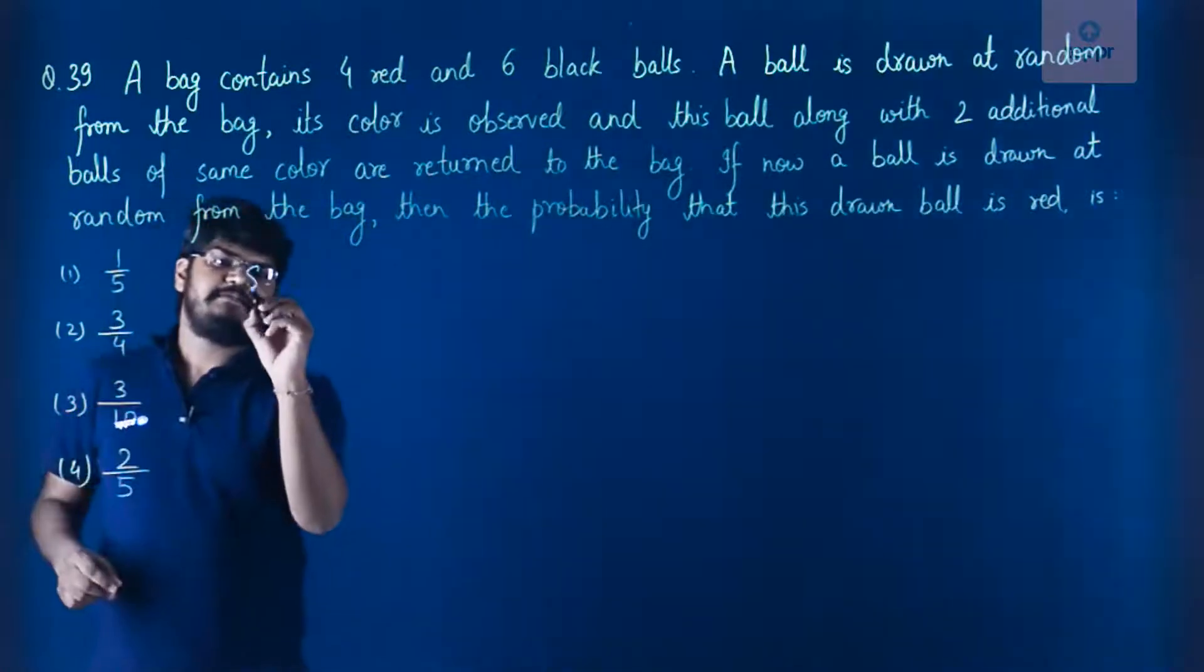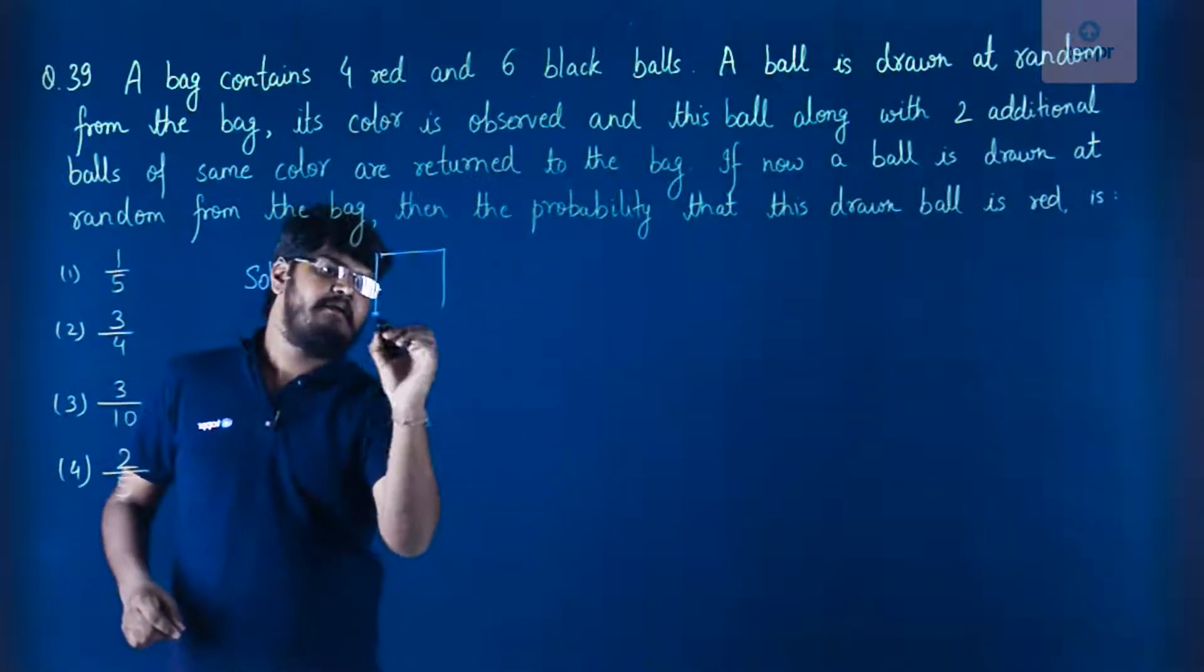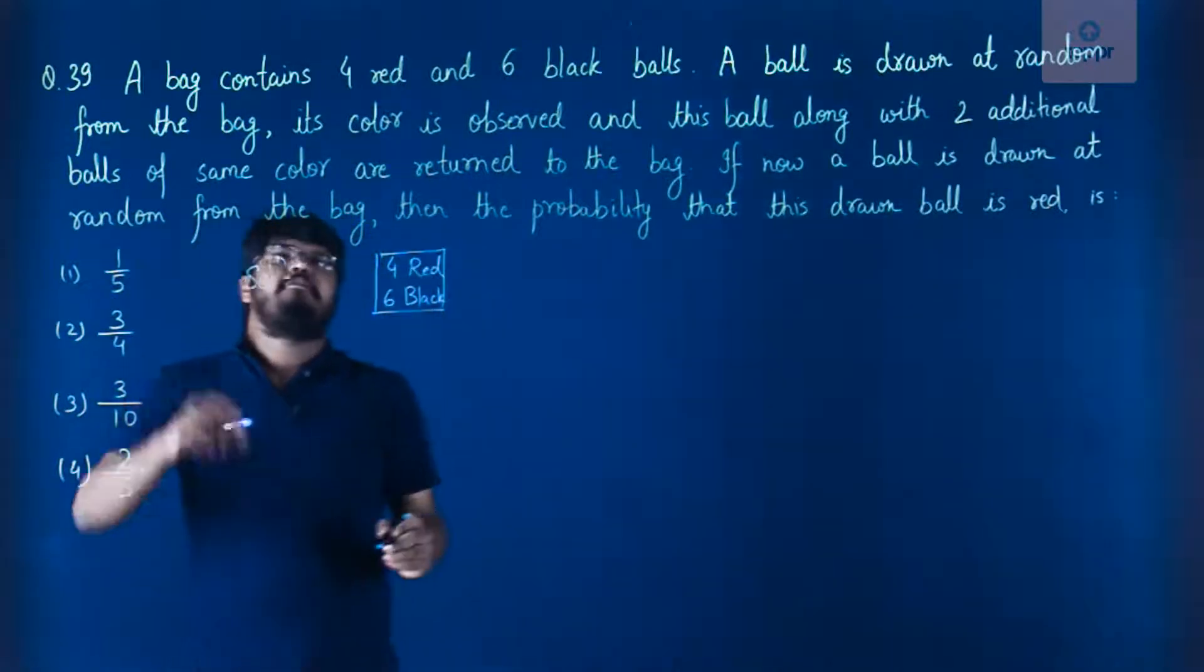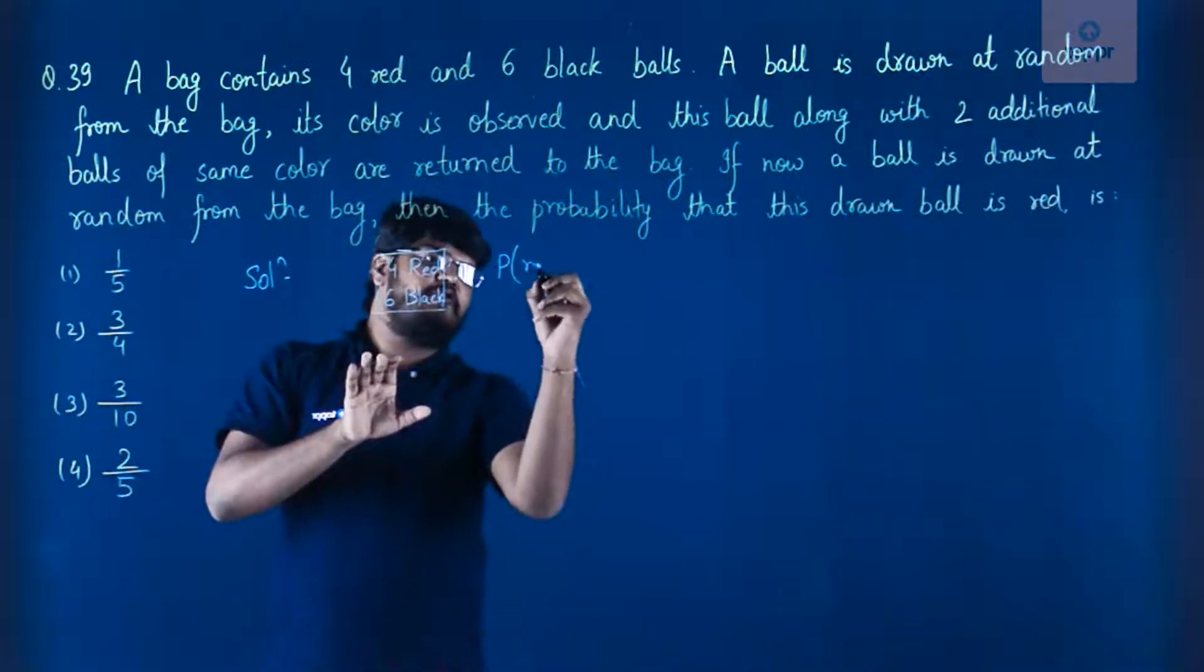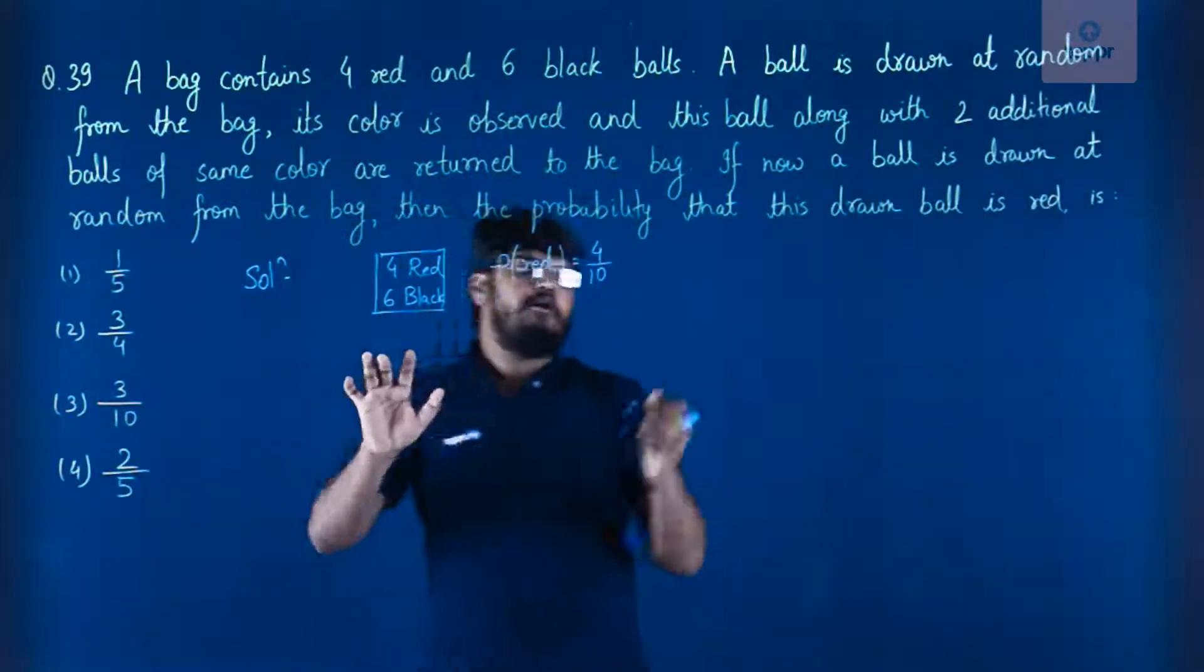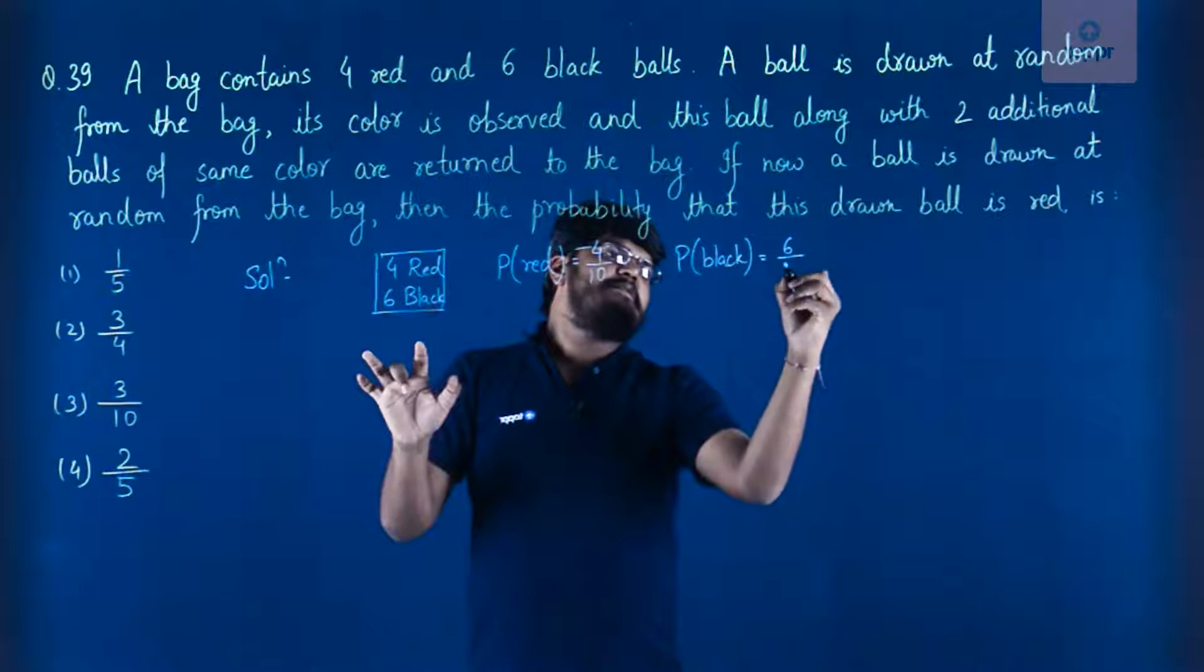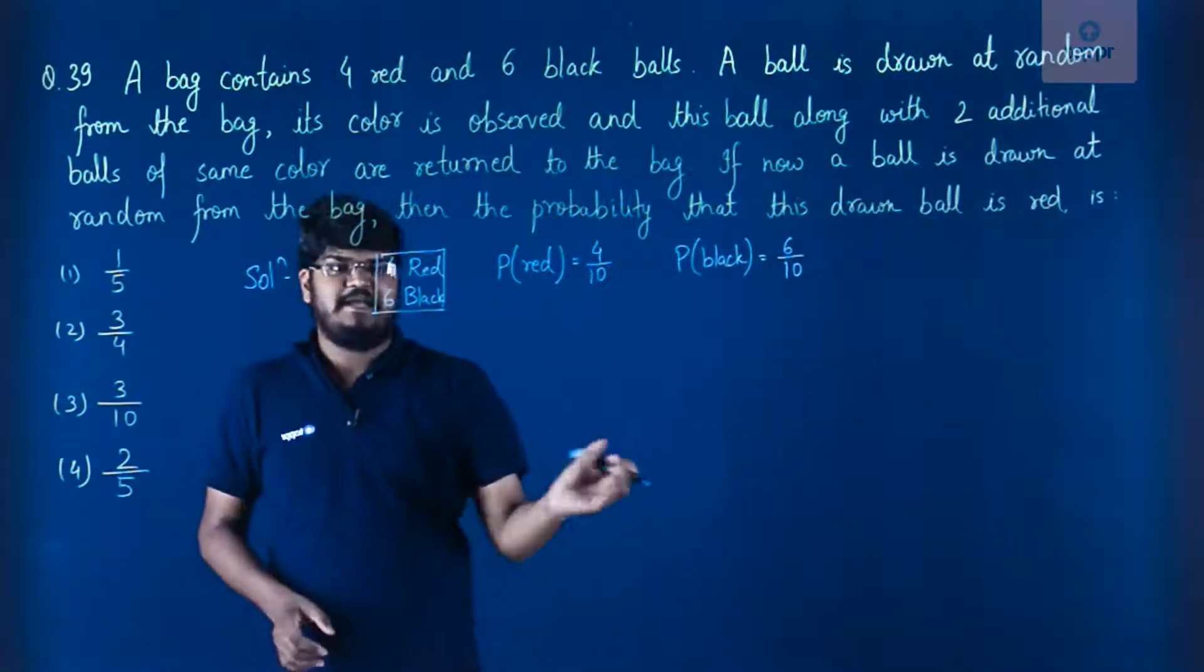So let us first make a weird looking bag. Now this bag has four red and six black balls, right? We have to draw a ball at random from this bag. So this means that the probability that the drawn ball is red is 4 by 10. Also, if the ball is black, then the probability of drawing a black ball is 6 by 10. You can add them up. The total probability sum is 1. This means it is correct.